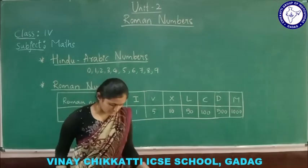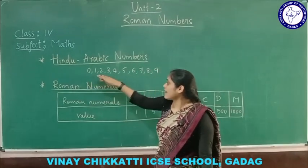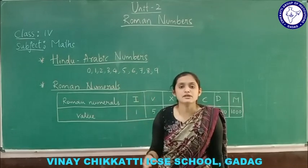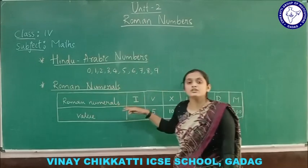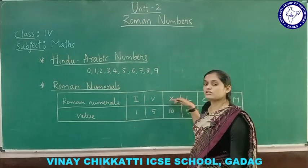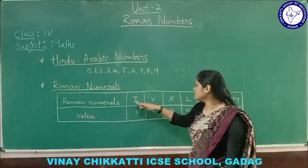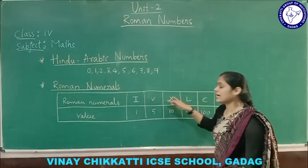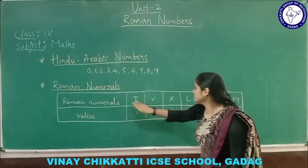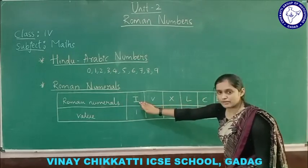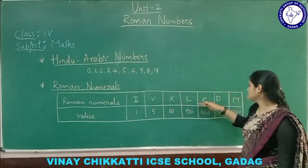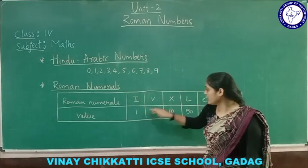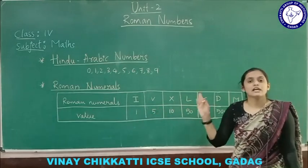The Roman numeral system uses symbols used by ancient Romans to represent numbers. These are a combination of alphabets, and each alphabet has a special value. The symbols are: I, V, X, L, C, D, and M. In Hindu-Arabic numbers, I represents 1 and V represents 5.